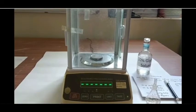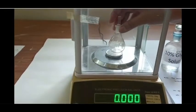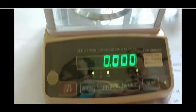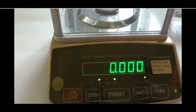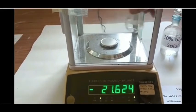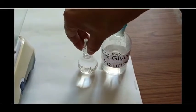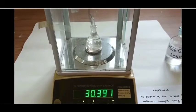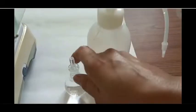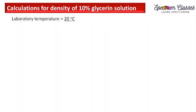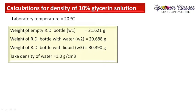Now let me show how to measure density. First I will weigh the density bottle — it reads 21 g, and I tare it so the subsequent weight will be the weight of the solution only. I will weigh the 10% glycerin solution. Note the laboratory temperature first. The weight of the glycerin solution reads 30.391 g. Now I will fill the density bottle with distilled water.